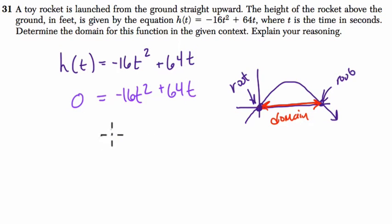I'm going to factor out -16t, it's a common factor. And -16t times t is -16t² plus four, and that equals zero.